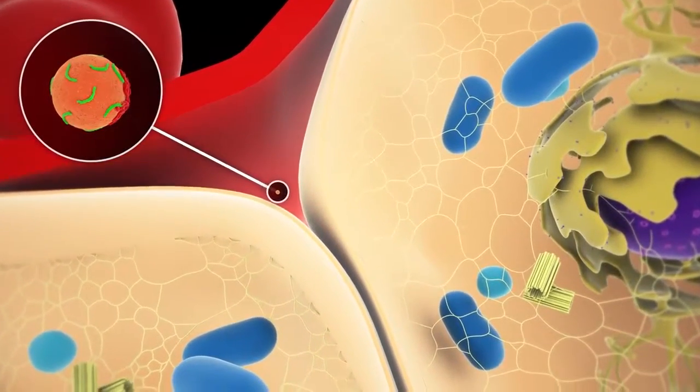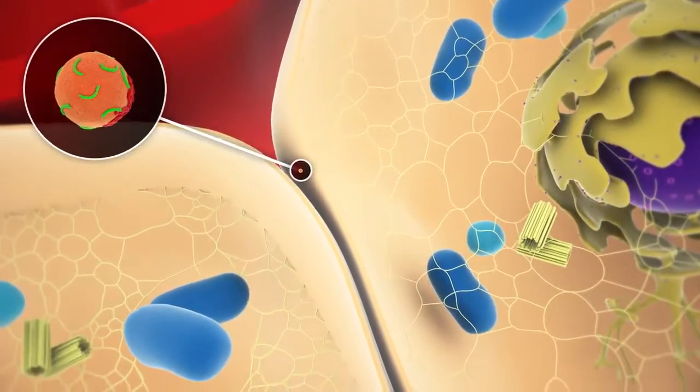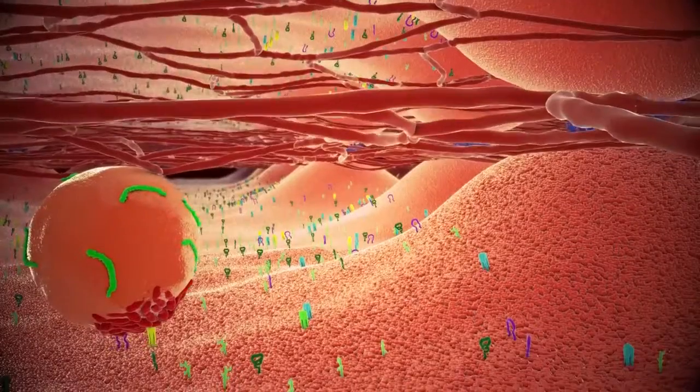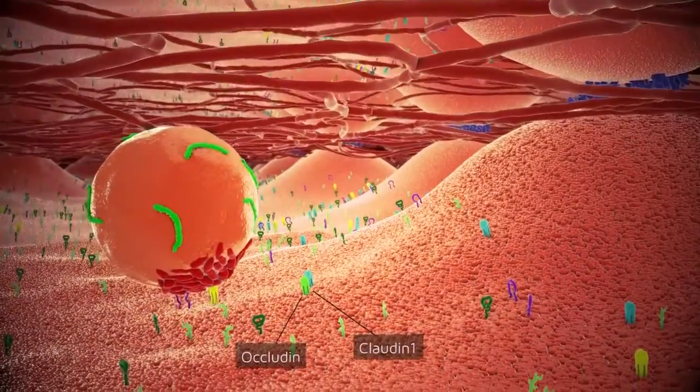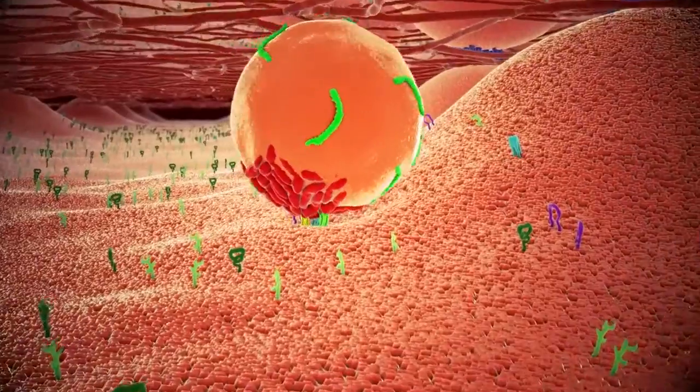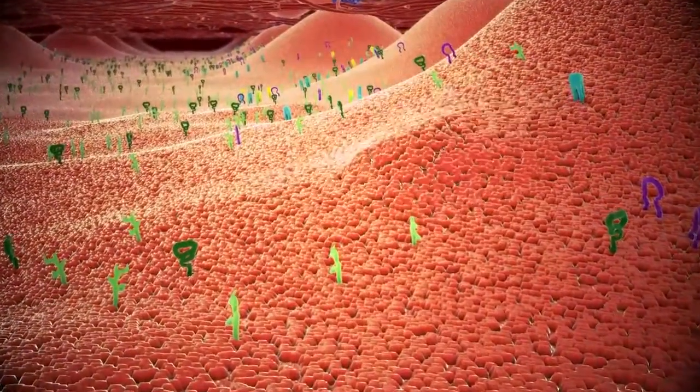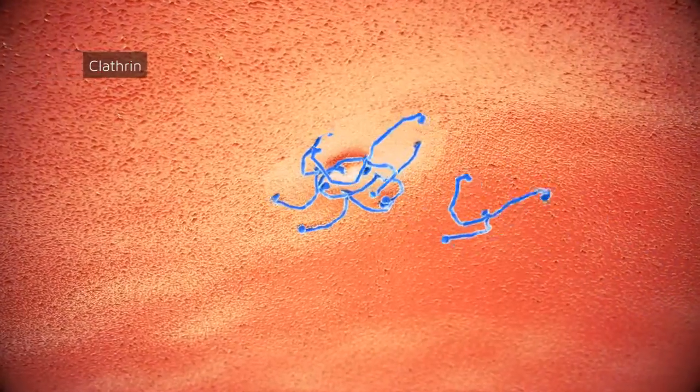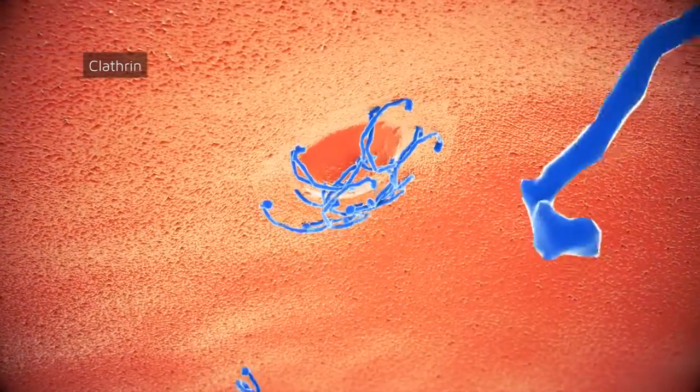The viral particle, complexed with these entry factors, reaches tight junctions and engages in further interactions with claudin-1 and occludin. The viral particle subsequently enters the cell via receptor and clathrin-mediated endocytosis.